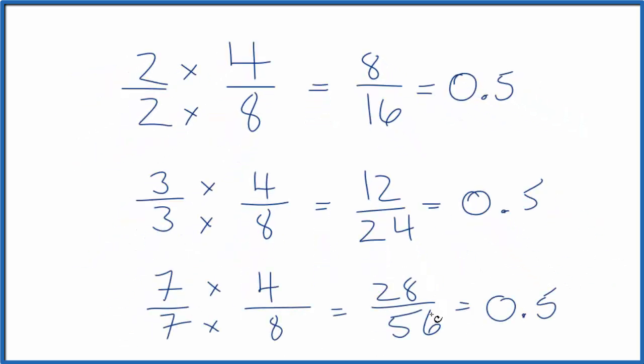So 28 over 56, that is equivalent to 4 8ths. They have the same value, though they do have different numerators and denominators. This is Dr. B with equivalent fractions for 4 8ths. Thanks for watching.